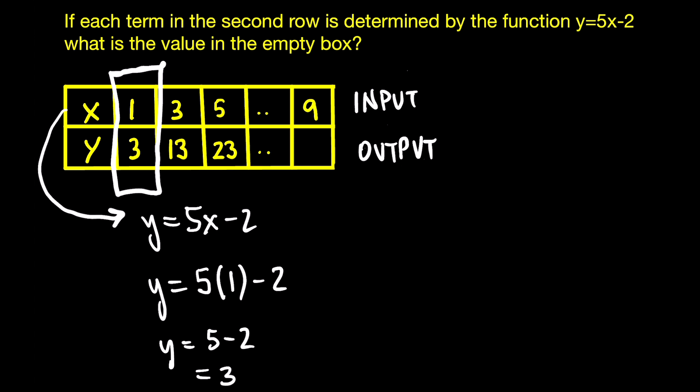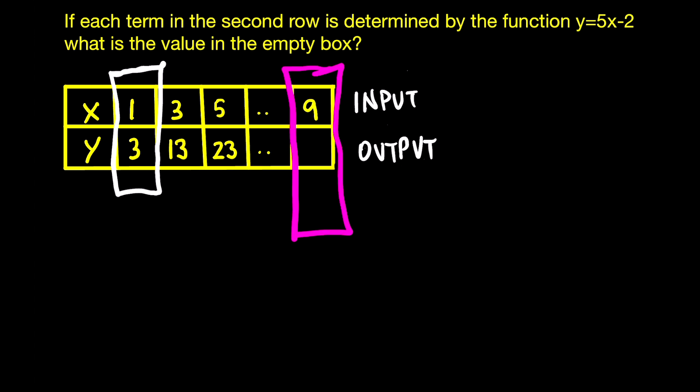So in the question, they're asking us to do the same thing, but now we have to plug in a value for x, which is 9. So if we introduce the 9 where the x should be, that will give us 45. y is equal to 45 minus 2, y is equal to 43.